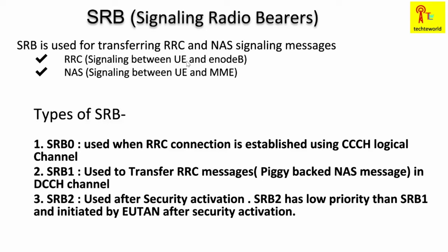In LTE, there are two types of signaling messages: RRC and NAS. RRC is between the UE and eNodeB, and NAS is between the UE and the MME. Both of these signaling messages will go through the SRB. The types of SRB are SRB0, SRB1, and SRB2 — so there are three types of SRBs in LTE.